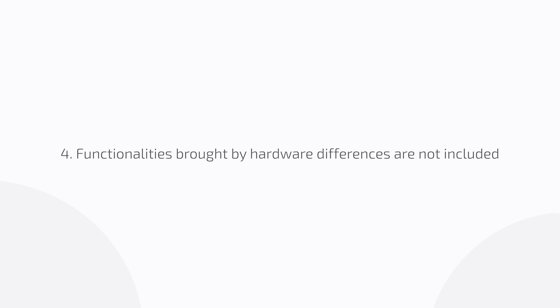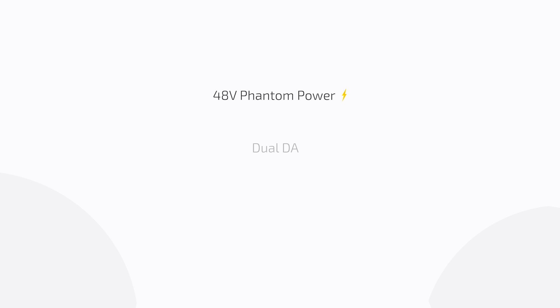This firmware update does not include functionalities brought by hardware differences between Ampero 2 Stomp and Ampero 2 Stage, such as 48-volt phantom power, dual DA, Bluetooth-related displays, etc.